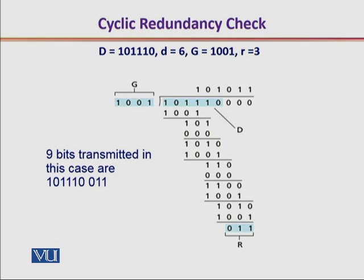We have the remainder bits equal to 3, because the remainder must be at least 1 bit less than the generator polynomial. When we do modulo 2 arithmetic-based division, we repeat these steps until we get a remainder of 011.